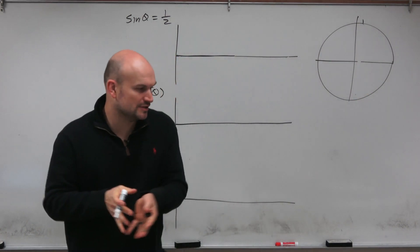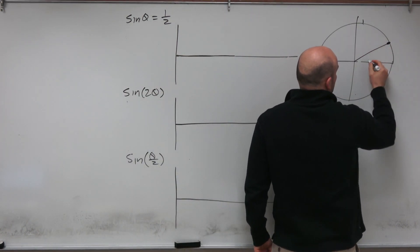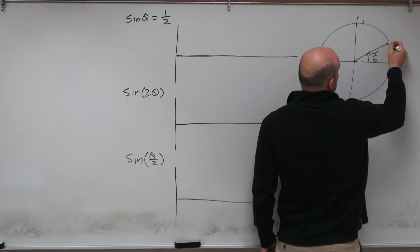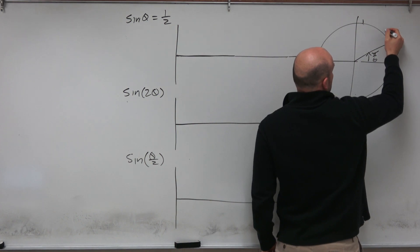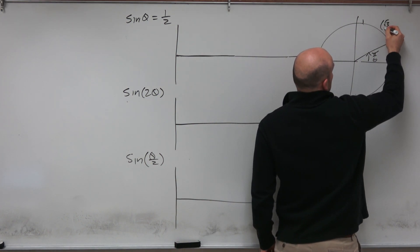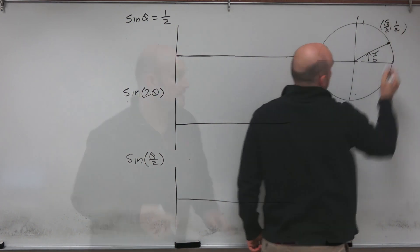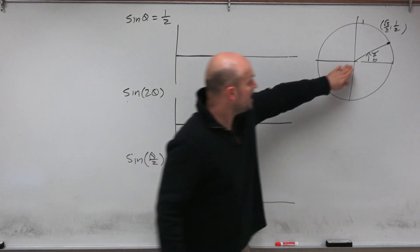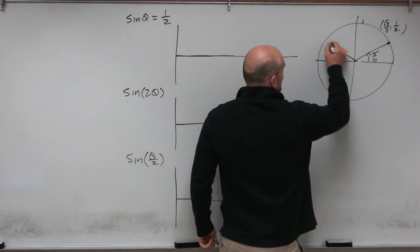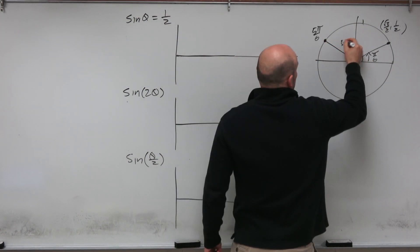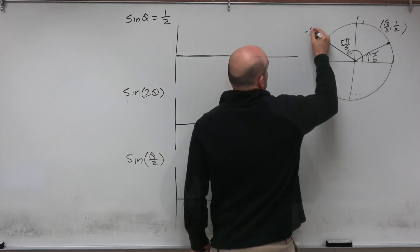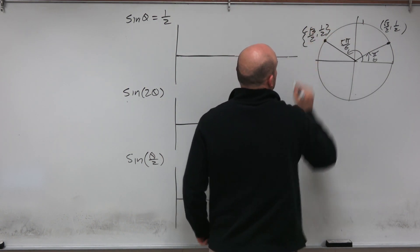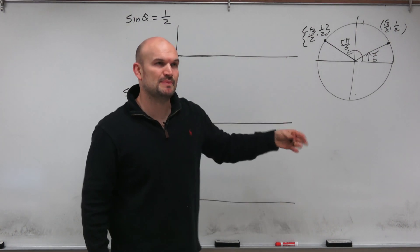By looking at the unit circle, we recognize the first answer is going to be pi over six. The reason why this is pi over six is because this coordinate point is going to be square root of three over two, comma, one half. But that's not the only solution — that's not the only angle where the y-coordinate is equal to one half. We also have the angle at five pi over six, where the coordinate is negative square root of three over two, comma, one half. Those are going to be your two solutions on the interval of zero to two pi.